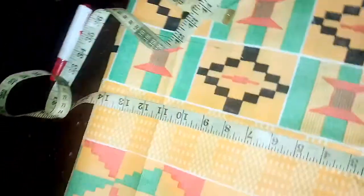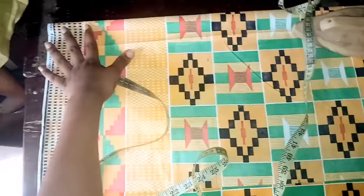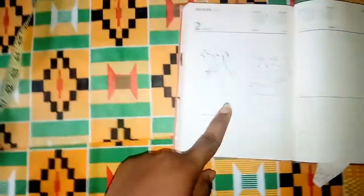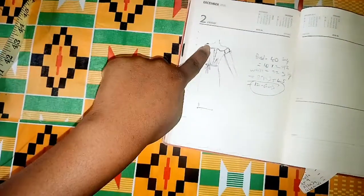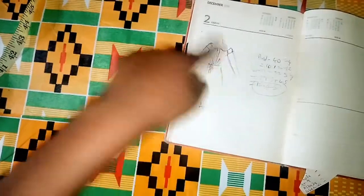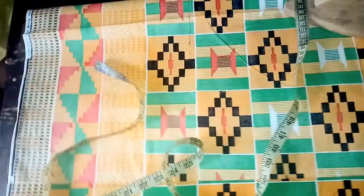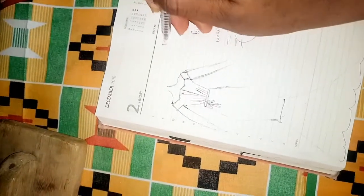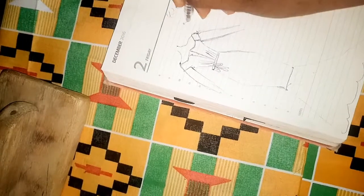The next thing would be to put our front width measurement. That is the measurement from this point to this point. So my front width measurement, let's just make it 10 inches. My sleeve width is 8 and a half.